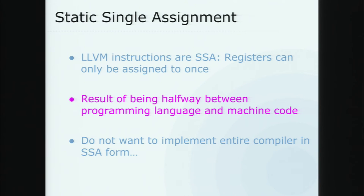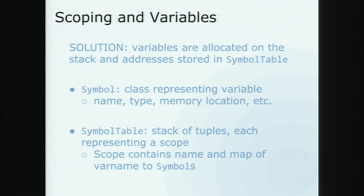Something really important about LLVM IR and other intermediate representations is that it's in SSA — static single assignment — which basically means that if you have a register, you can assign to it only once before it is frozen. If we wanted to implement Python based on registers alone, we would ask our users to write their Python in SSA, which is totally not reasonable. So we use a symbol table. Symbols are basically variables — they contain the memory location where the data is stored, the name, type, and some other metadata. We keep track of our symbols using a symbol table implemented as a stack to make scoping much easier. This part was implemented before I started contributing.